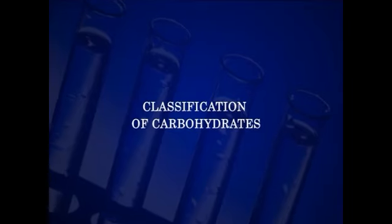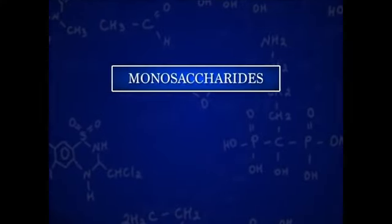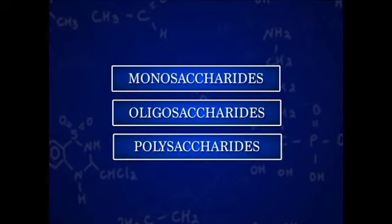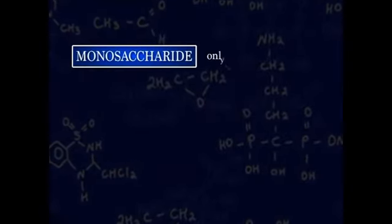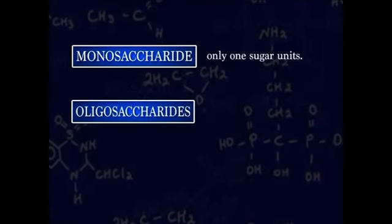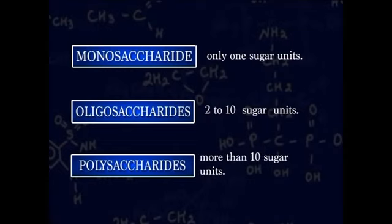Classification of Carbohydrates. Carbohydrates are broadly classified into three major classes: monosaccharides, oligosaccharides, and polysaccharides. Monosaccharides having only one sugar unit. Oligosaccharides having two to ten sugar units. Polysaccharides having more than ten sugar units.